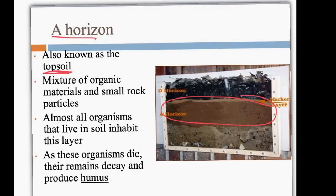As these organisms die, their remains will decay along with plant leaves and dead grass and things like that, and produce what's called humus — spelled with one M, so it's not really like hummus. Humus is decayed plant and animal matter.